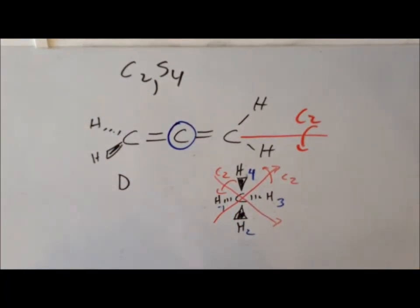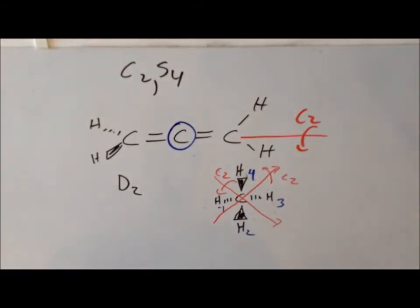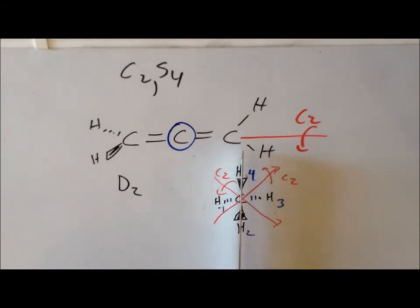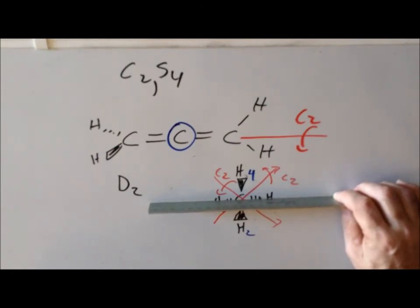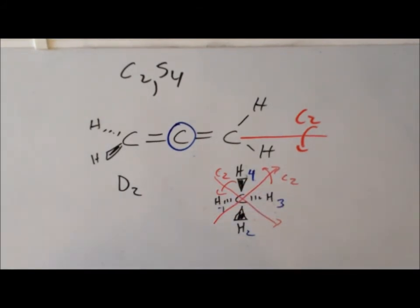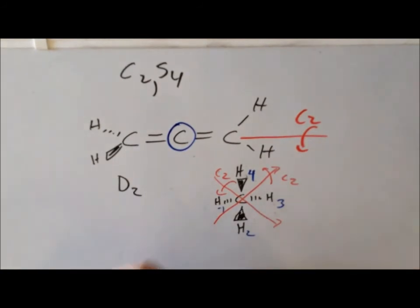Now we look for mirror planes. Since our main C2 axis runs this way, a horizontal mirror here would be needed for D2h, but there is none — it would reflect hydrogen in front to a position behind, and that doesn't work. However, we do have mirror planes: one going north-south dividing the west part from the east, and another along the x-z axis dividing the north half from the south. Since these are vertical mirrors in a D group, we refer to them as dihedral mirrors. That gives us D2d as the point group symmetry for allene.